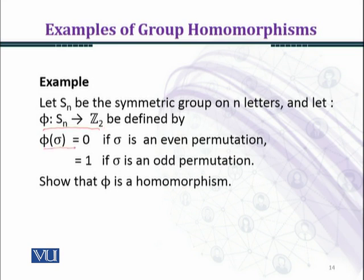phi(σ) equals 0 if σ is an even permutation and phi(σ) equals 1 if σ is an odd permutation. Here Z2 is the group under modulo 2, we have two residue classes 0 and 1.